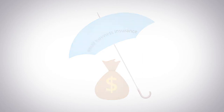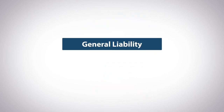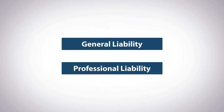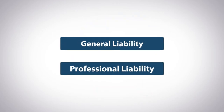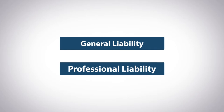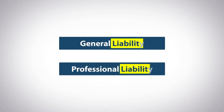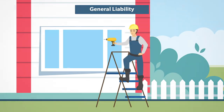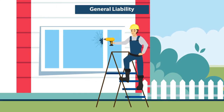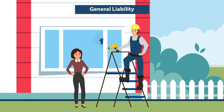Two common forms of liability insurance are general liability and professional liability. While the names sound similar, the policies are different in what they cover. General liability insurance primarily covers the cost of physical incidents — things like property damage and injuries.